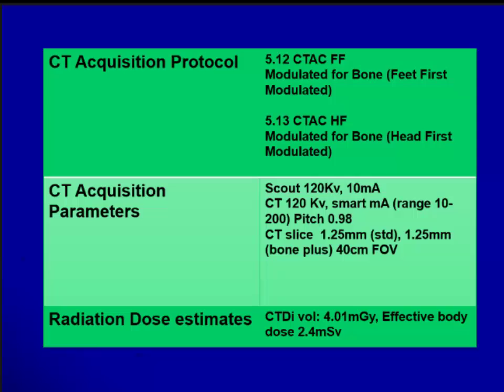Comparing without CT attenuation correction versus with CT attenuation correction: without correction, you might report an area as hot and miss another finding, or over-report lesions highlighted by background activity. With attenuation correction, the true focus of lesions becomes clear. If you are reporting SPECT alone, you should be aware of over-reporting lesions because they are more highlighted against background activity without correction.